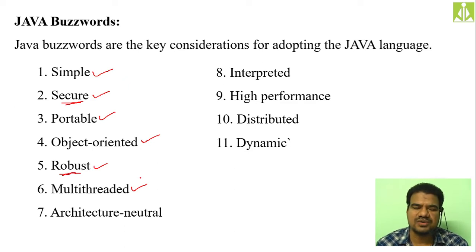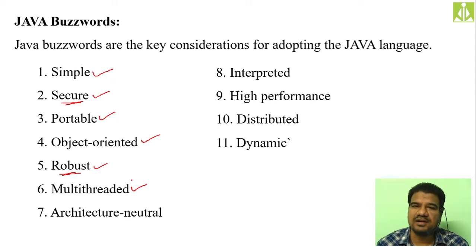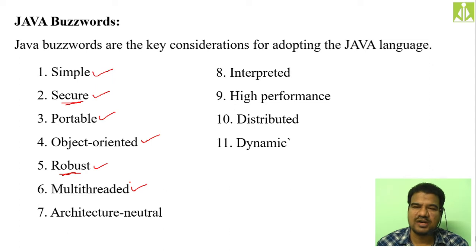Executing a task in terms of processes is a heavyweight thing, whereas executing that same task in terms of threads is a lightweight thing. Java is multi-threaded — we can subdivide our program or task to the level of threads and execute all those threads concurrently, simultaneously, parallel to one another. That concept is called multi-threading and Java supports multi-threading.